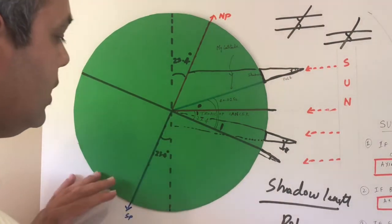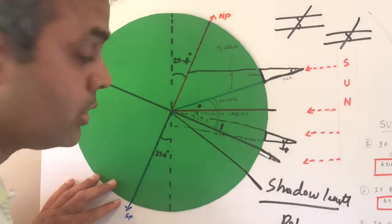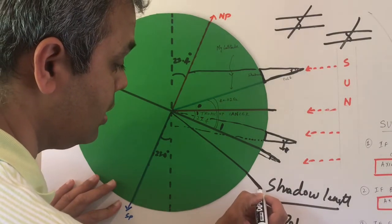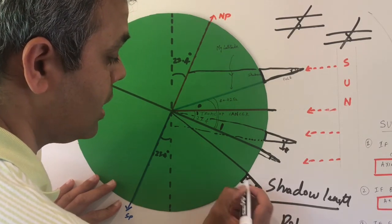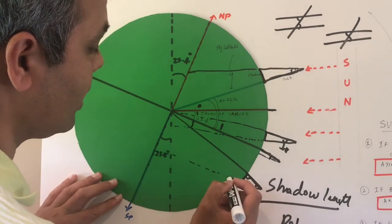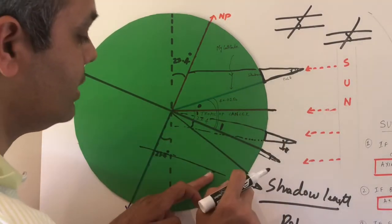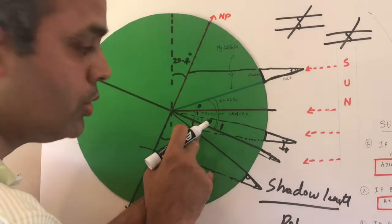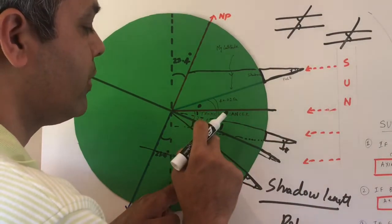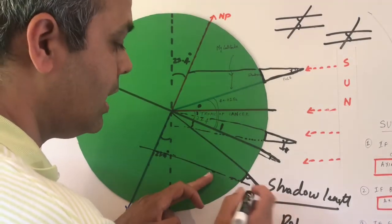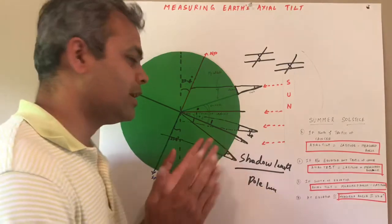For someone living south of the equator, the pole sticks out on the other side, and the Sun's rays hit from the north. Extending a parallel line, the measured angle equals the current latitude plus 23.4°. So to find the axial tilt, you take the measured angle and subtract the latitude, giving: axial tilt = measured angle − latitude.